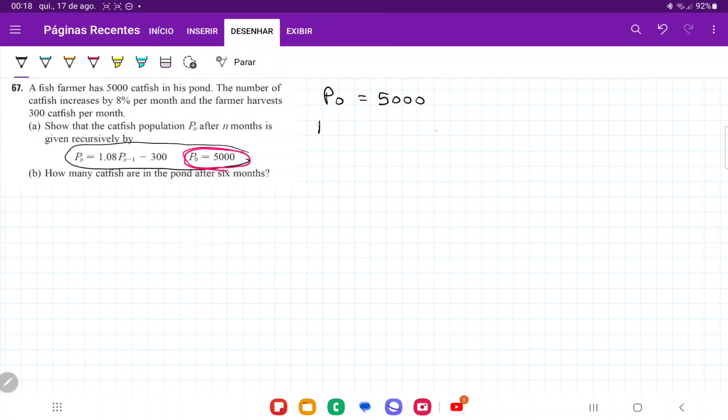And then let's think about what happens to P1. So, which means what is the population after one month? Well, we have here that it increases by 8% every month. So if it increases by 8%, we're going to get 5,000 plus 5,000 times 8%, so times 0.08. And then he harvests 300. So that means that he removes from his population 300.